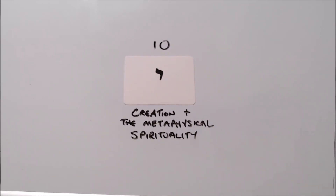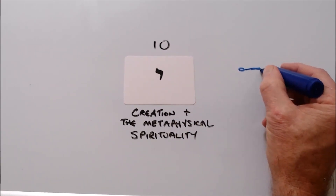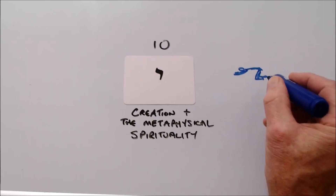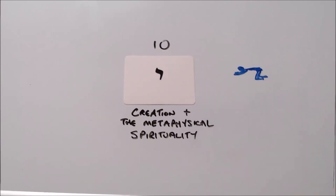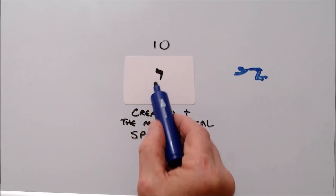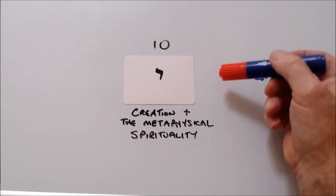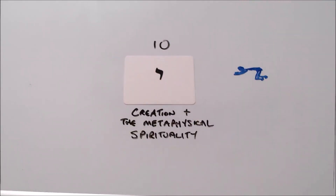The form has at least two interpretations. First, a person in prayer — and some people see the Yud as a person in prayer. Others have seen it as he lifts his heart. That little lift in the Yud: he's lifting his heart to God.